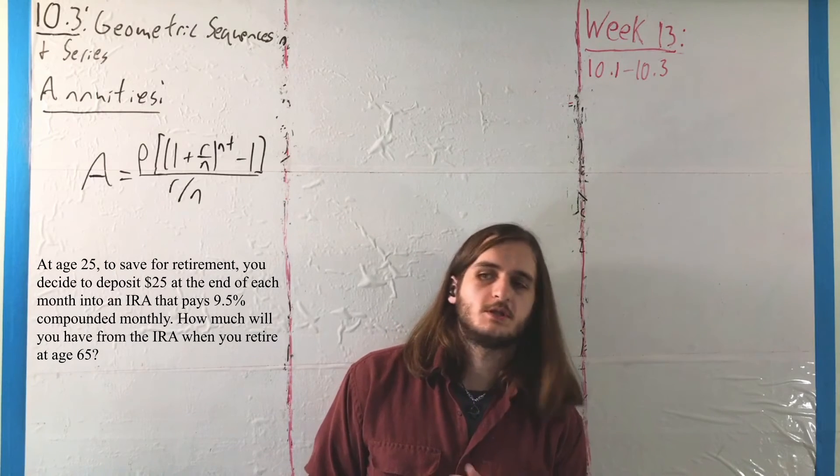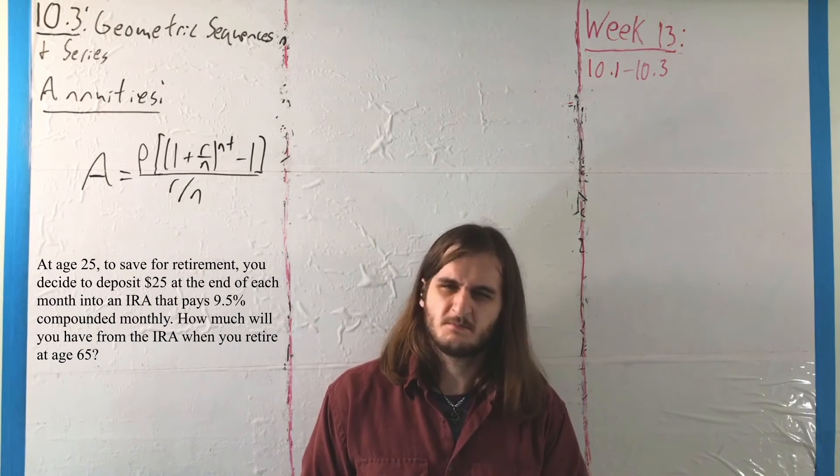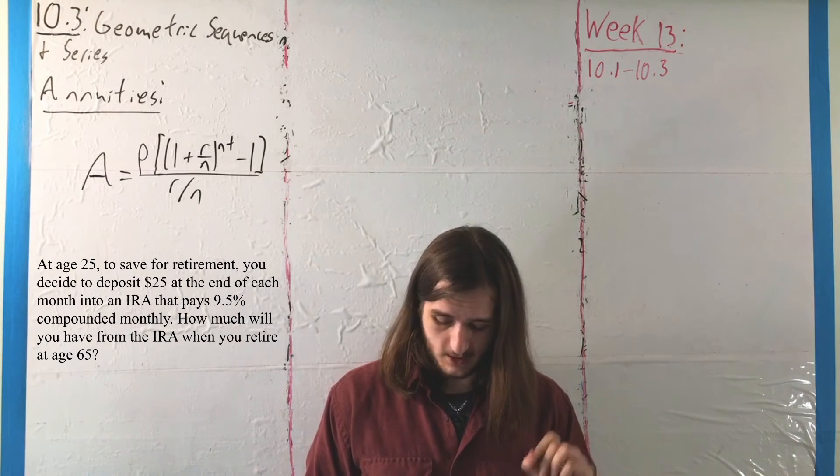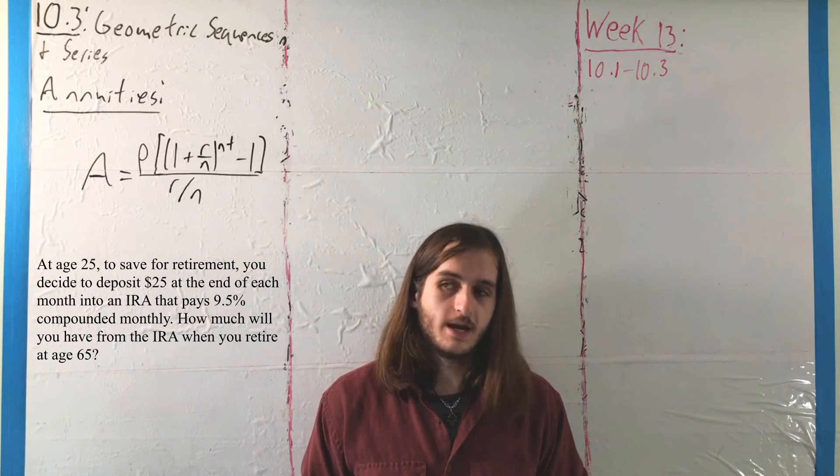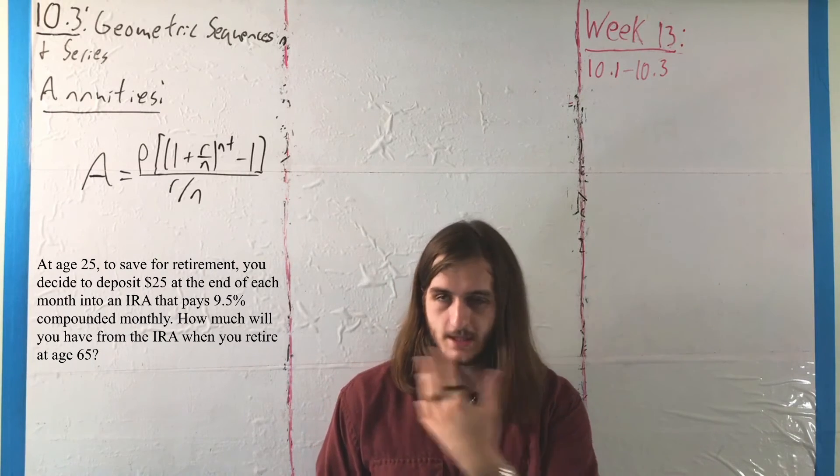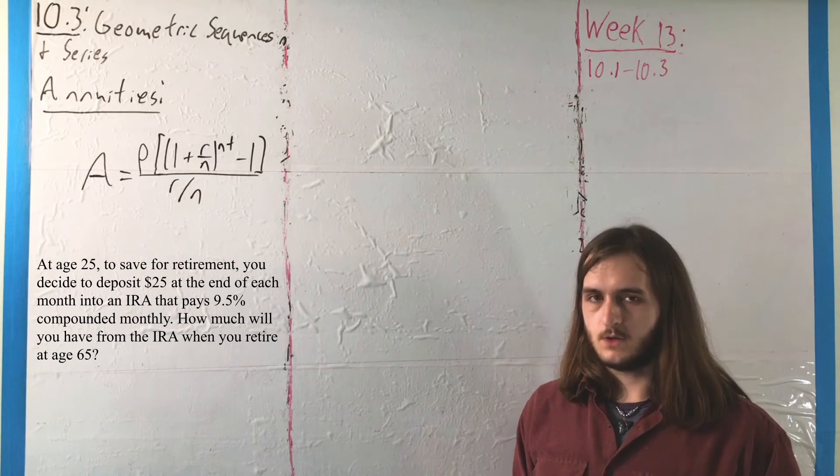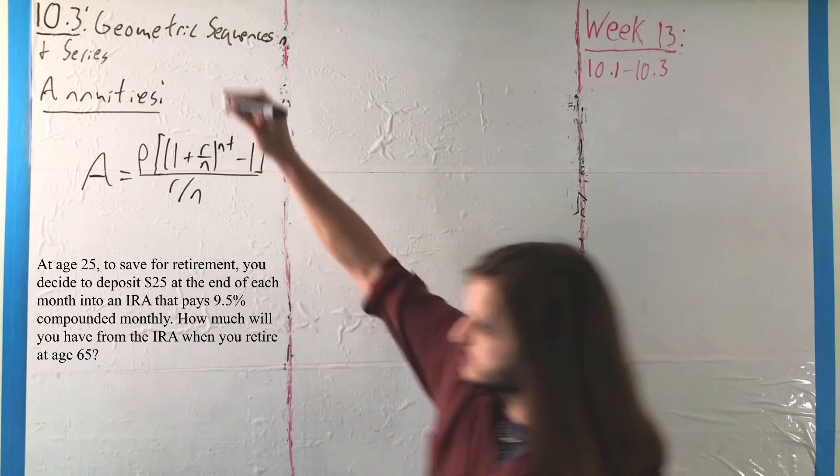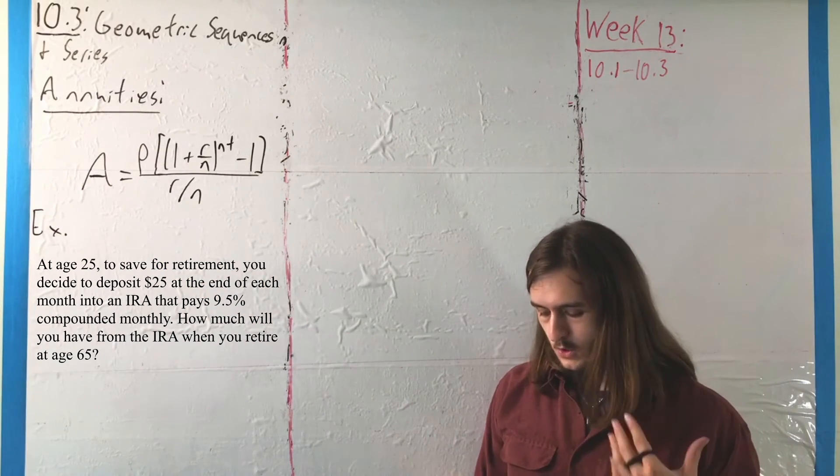A couple of assumptions in here. For one, most of you guys are not 25. Most of you guys are not thinking about retirement accounts yet. Also, by the time you are, you'll probably want to deposit more than $25. You won't get an interest rate of that close to 10%. And well, unfortunately, people probably aren't going to be looking at retiring at 65 anymore. But anyway, the hope with this example is that in working through this, you guys start to see the types of value that you can get from a retirement account, that is from starting a retirement account early.